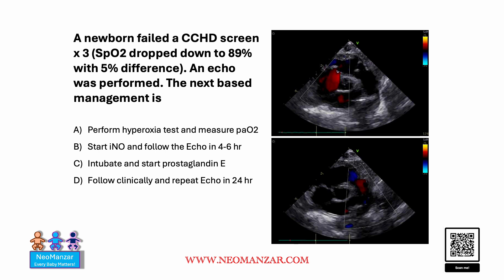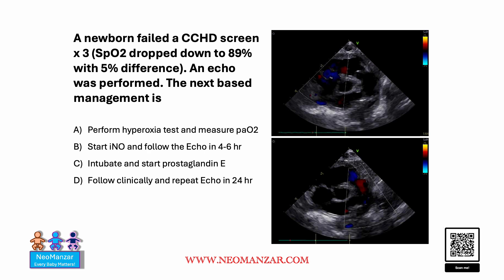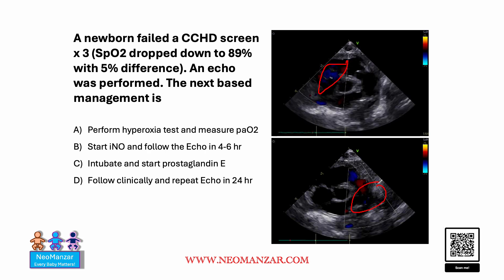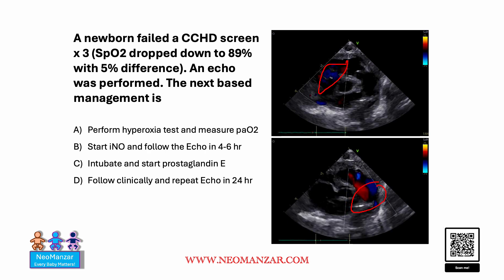So an echo is performed. As you can appreciate here, keep an eye — you will see tricuspid regurgitation. And on the second echo, you can see PDA with bi-directional flow. So now we know there is mild tricuspid regurgitation and a PDA with a bi-directional shunt.